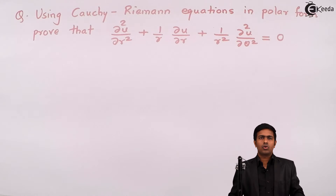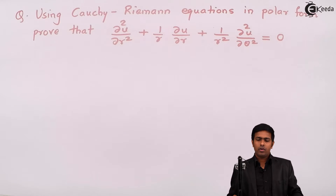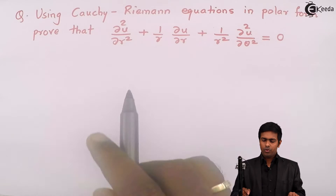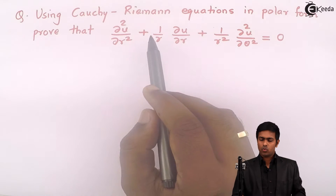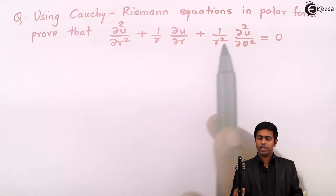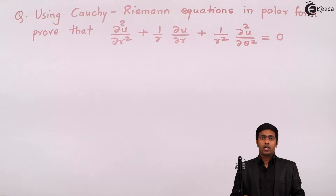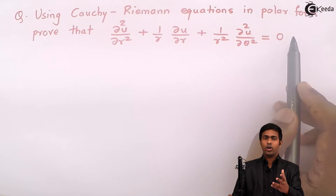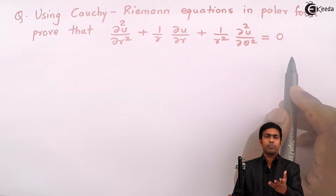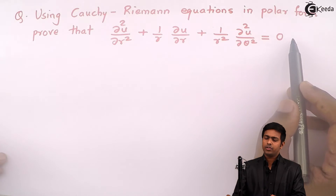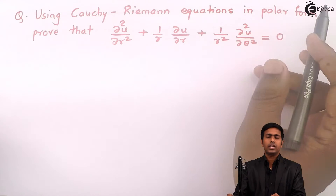Hello friends. Here in this problem, using Cauchy-Riemann equations in polar form, we have to prove that ∂²u/∂r² + (1/r)(∂u/∂r) + (1/r²)(∂²u/∂θ²) = 0. This given equation is also called the Laplace equation in polar form. So it means we have to derive this Laplace equation from the Cauchy-Riemann equations in polar form.